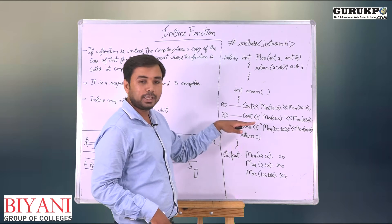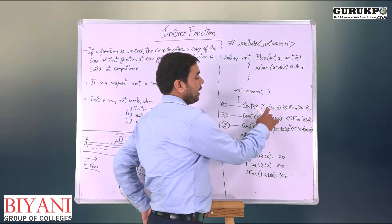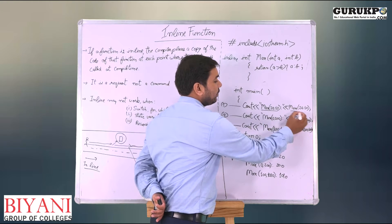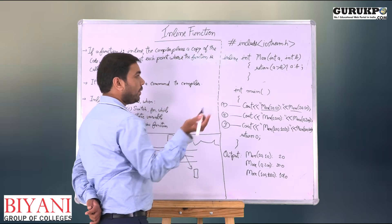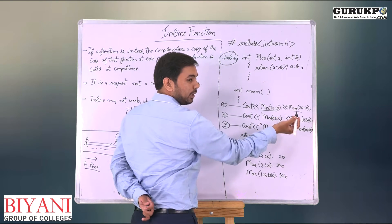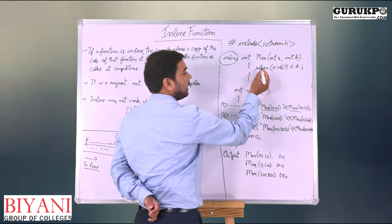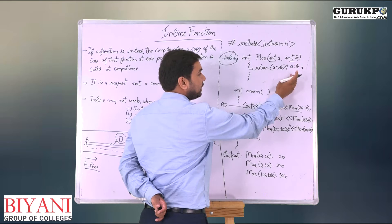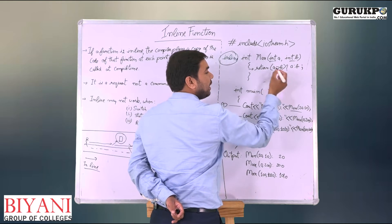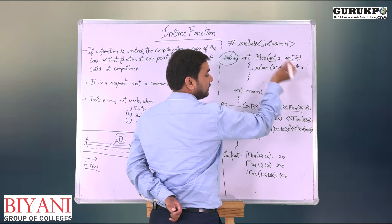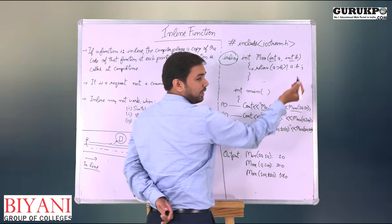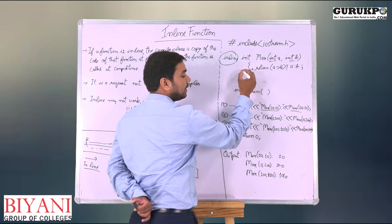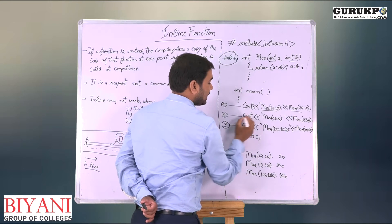The max function is called 3 times but with different arguments. I have called the max function with 20 and 10, then again with different arguments. When I am not using inline, the compiler will jump to the max function body, check the parameters, then go to the first line of the function and execute the conditional statement which compares a and b and returns a if a is greater, or b if b is greater. When execution of that function is done, the compiler returns to the next statement of the main function.